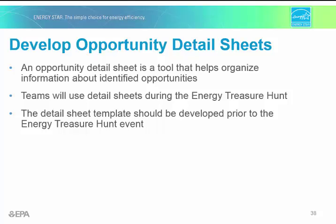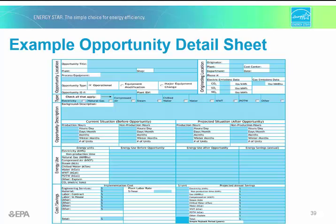It's important to have a tool to help organize information about identified opportunities when it comes time to start crunching numbers. Here's an example — a template that should be developed prior to the energy treasure hunt event. This is an opportunity detail sheet. These detail sheets can be documents printed and filled out by hand, simple spreadsheets, or more sophisticated spreadsheets like the one on screen from Toyota, which has embedded formulas to assist with calculations. By changing the operating parameters on another tab, it will update the potential savings, and you might also have a tab that calculates total energy savings across all projects. These sheets are indispensable because they keep data organized and consistent, making the process easier for participants who may not be traditional energy managers.